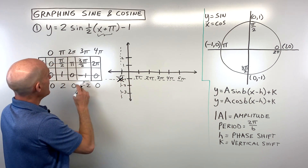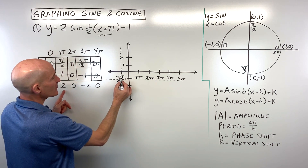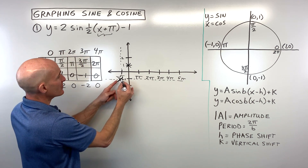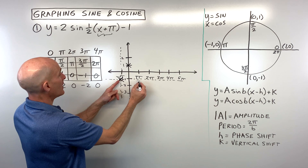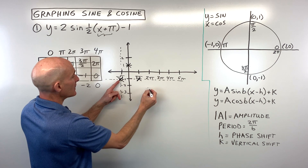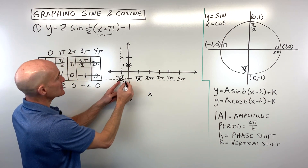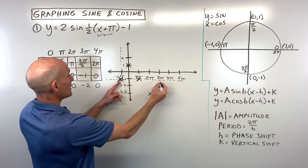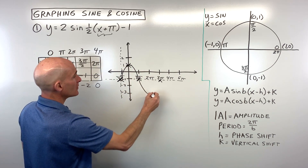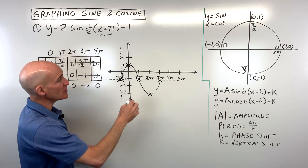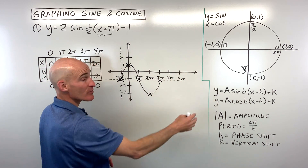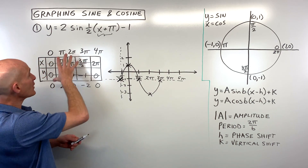Now we're going to plot these points from that new origin. (0, 0) is right here; then (π, 2) means going right π, up two; (2π, 0) means right 2π, up zero; (3π, -2) means right 3π, down two; and (4π, 0) means right 4π back to zero. This completes one cycle of our sine graph. If you want to repeat it, keep going — right π up two, back to zero, and repeat.